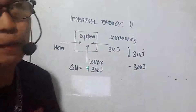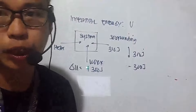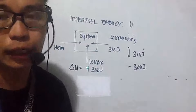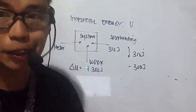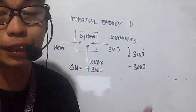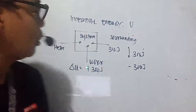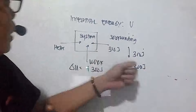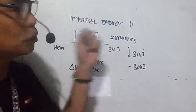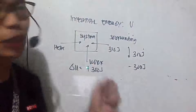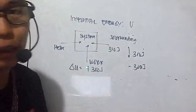As an analogy, if someone pays you 500 pesos, your account gains 500 pesos and the other person's account is deducted 500 pesos — money isn't created, just transferred. Similarly, if work is done to the system, the system's internal energy increases while the surroundings lose energy. If the system does work, the surroundings gain energy while the system loses energy.